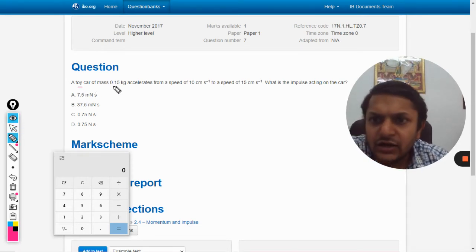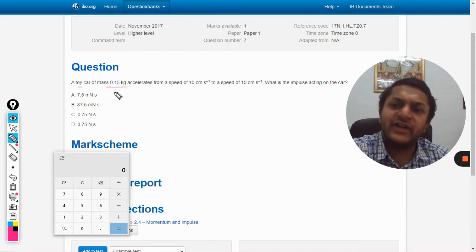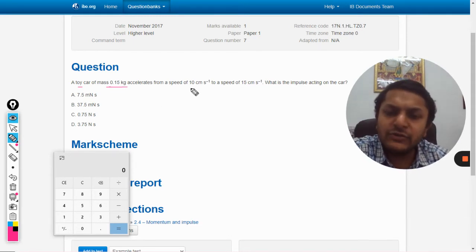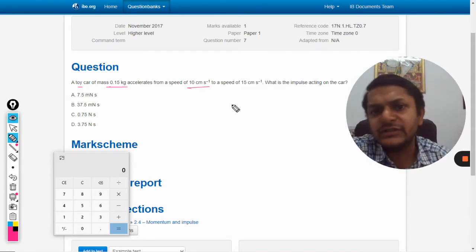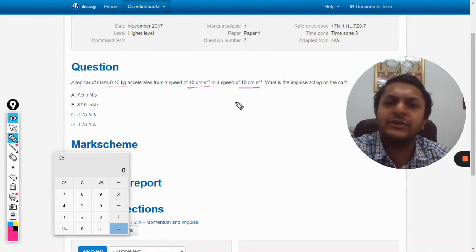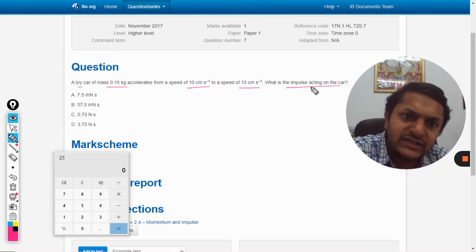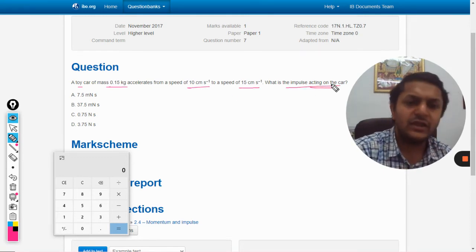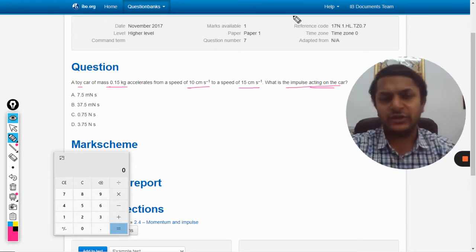Okay, a toy car of mass 0.15 kg accelerates from the speed of 10 centimeter per second to the speed of 15 centimeter per second. What is the impulse acting on the car?